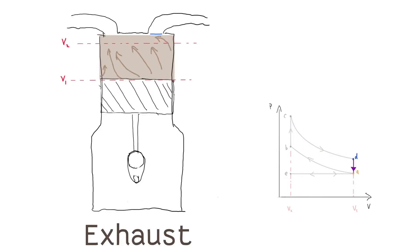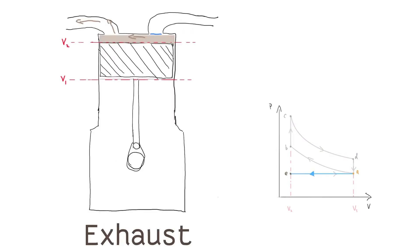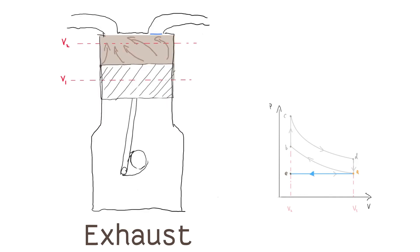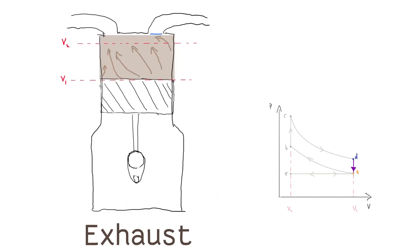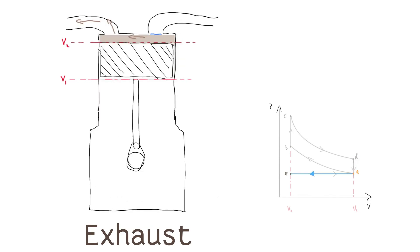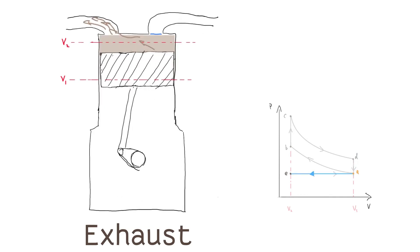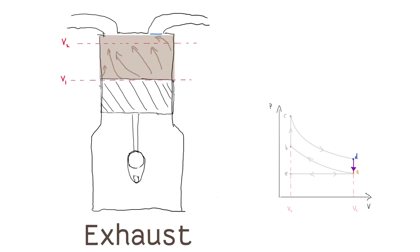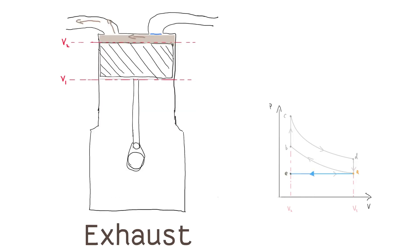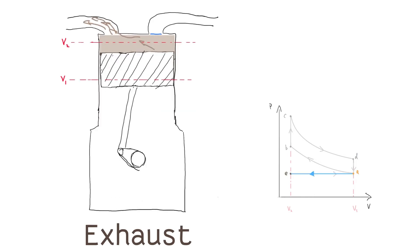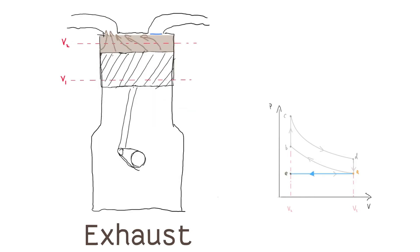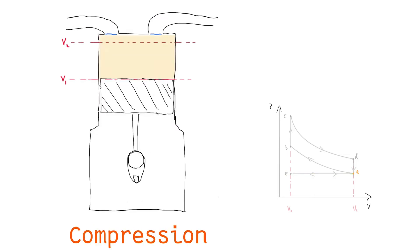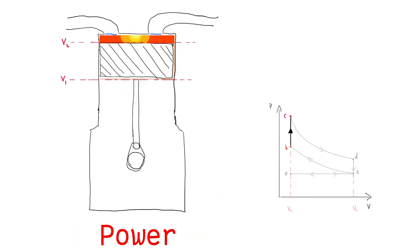Finally comes the exhaust stroke. The exhaust valve is opened and the piston extends, pushing the exhaust fumes out of the cylinder. As the cylinder has been unsealed, there is a rapid drop in pressure. Excess heat is absorbed by the piston head and casing. Add all this together and you get the Otto cycle.